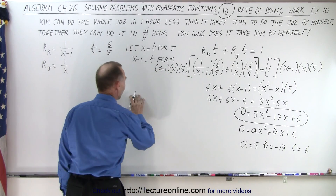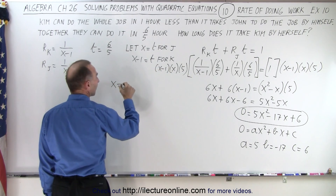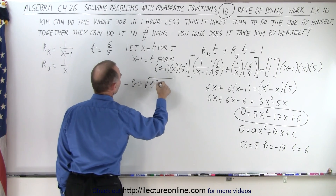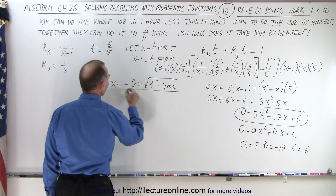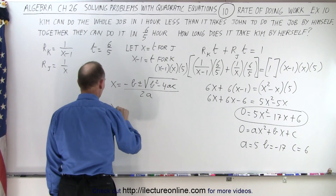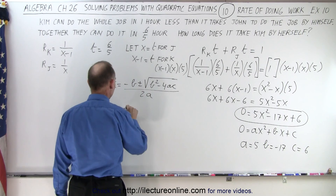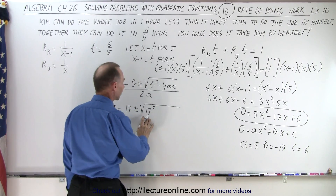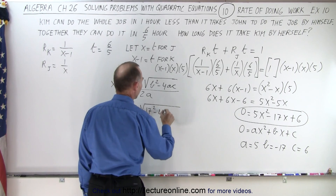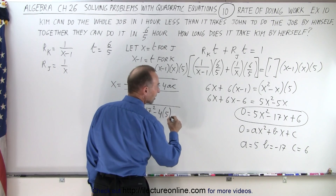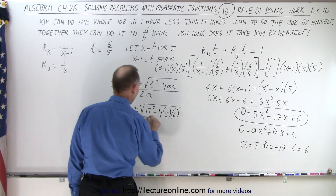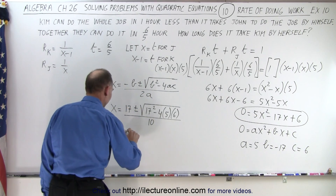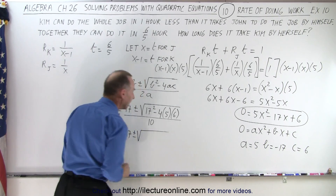Let's plug that into our quadratic formula. We have x equals minus b, plus and minus the square root of b squared minus 4ac, all divided by 2a. So x equals minus b, which is 17, plus and minus the square root of 17 squared, minus 4 times a, which is 5, times c, which is 6, all divided by 2 times a, which is 10.